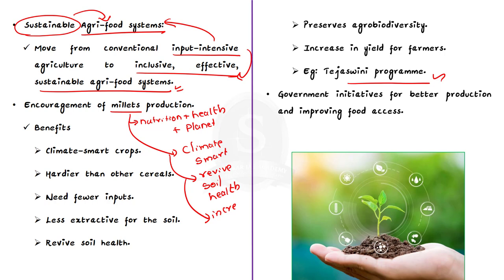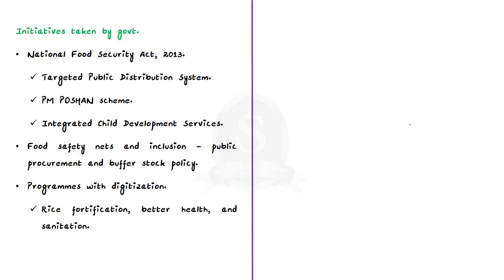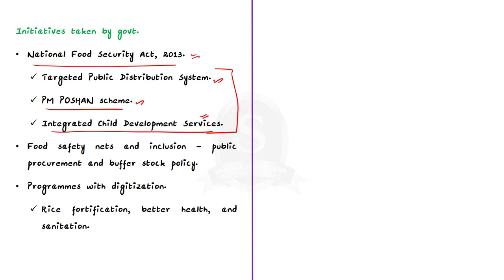The government should also take initiatives regarding better production and improving food access for vulnerable populations. One of India's greatest contributions to food equity is the National Food Security Act 2013, which integrates the targeted public distribution system, the PM Poshan scheme, and the Integrated Child Development Services. Food safety nets are linked with public procurement and buffer stock policy, as was visible during the global food crisis of 2008-12 and the COVID-19 pandemic, when vulnerable and marginalized people continued to be buffered by the targeted PDS. The government continues to take measures including digitization, rice fortification, and improvements in health and sanitation.